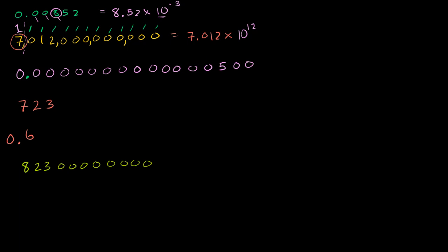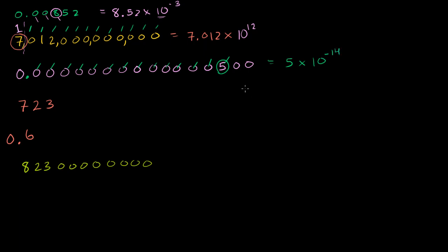For the very small number, we go behind our decimal point and find the first non-zero number — that's our 5. So it's going to be equal to 5. There's nothing to the right of it, so it's 5.00 if we wanted to add some precision. And then we count how many numbers to the right of the decimal we have — 1 through 14, including the 5 itself. So it's 5 times 10 to the minus 14th power.